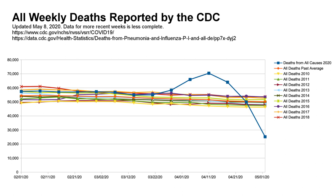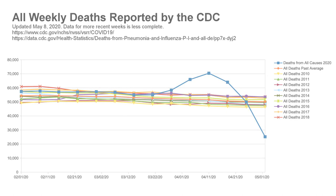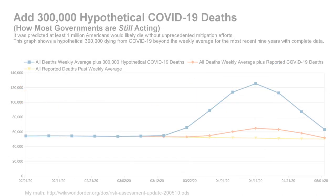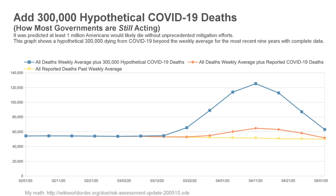Even if I pretend that the unprecedented mitigation policies cut the cumulative deaths by half, it is very unlikely that this virus is more than four times deadlier than the seasonal flu. But when these policies were introduced, public health experts discussed this virus as being 10 to 15 times as bad as the seasonal flu.